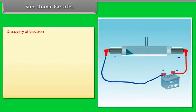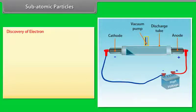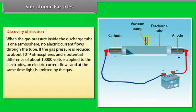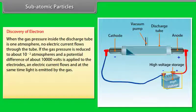Subatomic particles: Discovery of electron. A discharge tube is a long glass tube fitted with metal electrodes on either end, across which high voltage can be applied. The tube is also connected to a vacuum pump for controlling the pressure of gas inside. There is a coating of phosphorescent material behind the anode. When the gas pressure inside the discharge tube is 1 atmosphere, no electric current flows through the tube.